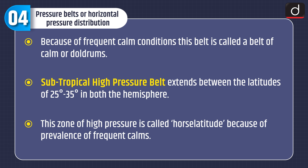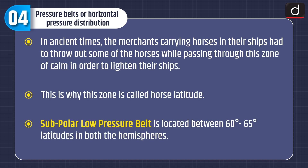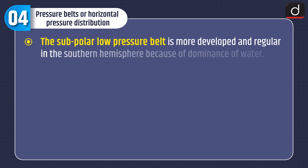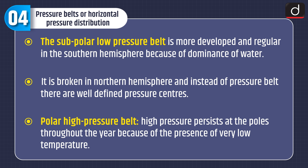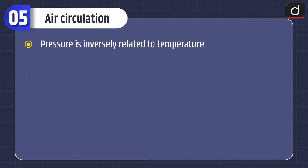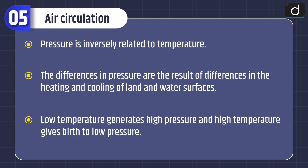The subtropical high pressure belt extends between 25 and 35 degrees latitude in both hemispheres, called horse latitudes because of frequent calms. In ancient times, merchants carrying horses in ships had to throw out some horses while passing through this calm zone — hence the name. The subpolar low pressure belt is located between 60 and 65 degrees latitude in both hemispheres, more developed in the southern hemisphere due to dominance of water, and broken in the northern hemisphere into well-defined pressure centers. Polar high pressure persists at the poles throughout the year due to very low temperatures. Pressure is inversely related to temperature: low temperature generates high pressure and high temperature gives birth to low pressure.